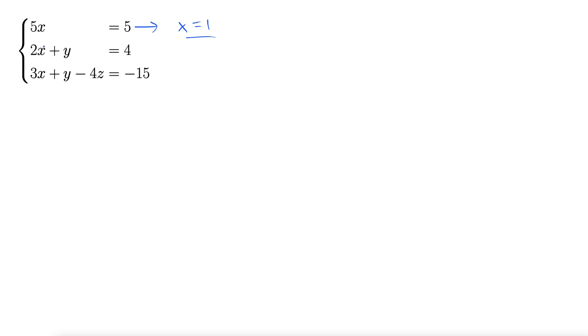Okay, now I'm going to plug in here. Doing that, I have 2 times 1 plus y equals 4. Subtracting the 2 from both sides gives us y equals 2. And now we're two variables down.